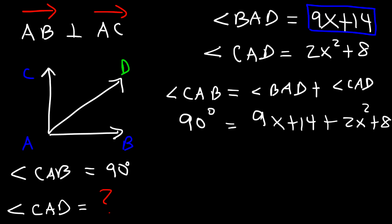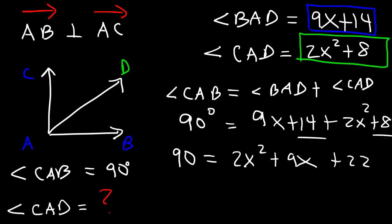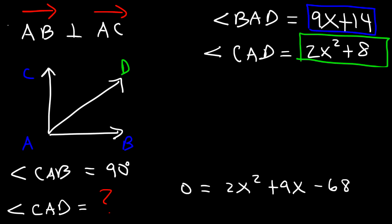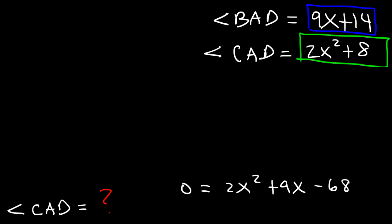So now we have an algebraic equation. If we could find the value of x, then we could find the measure of angle CAD using this expression. All we've got to do is plug the value of x into that expression, 2x squared plus 8, and that'll give us the answer. So first, let's combine like terms. 14 plus 8 is 22. So we've got 2x squared plus 9x plus 22 equals 90, and that's in standard form. Now, let's subtract both sides by 90. 22 minus 90 is negative 68.